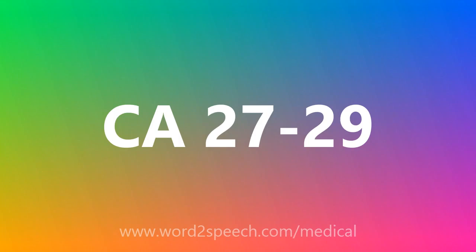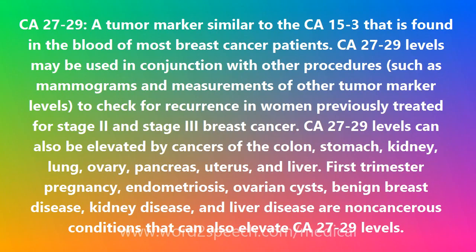CA 27-29 is a tumor marker similar to the CA 15-3 that is found in the blood of most breast cancer patients. CA 27-29 levels may be used in conjunction with other procedures, such as mammograms and measurements of other tumor marker levels, to check for recurrence in women previously treated for stage 2 and stage 3 breast cancer.